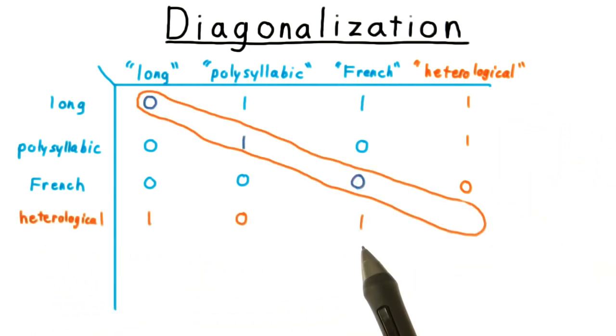But when we try to add the meaning to the table, we run into problems. Remember, a heterological word is one that expresses a property that its representation does not possess.